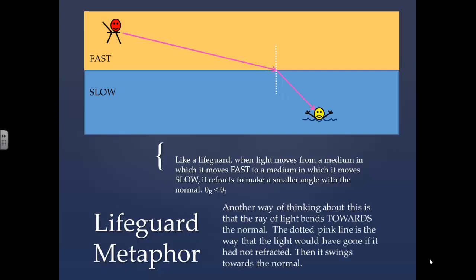Another way of thinking about this is that the ray of light bends towards the normal. The dotted pink line is the way that the light would have gone if it had not refracted, and it kind of swings towards the normal.